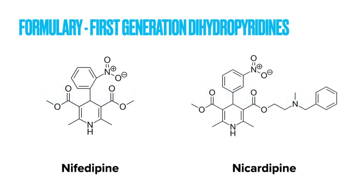The first generation dihydropyridines include nicardipine and also nifedipine — you do still sometimes see immediate release nifedipine in formularies for the management of Raynaud's phenomenon. These were the earliest calcium channel blockers and they have a very fast onset but a very fast offset, meaning you need to dose them multiple times a day to get a sustained effect, which makes them very impractical for day-to-day use. They also have the problem that with this short half-life you can get a reflex tachycardia as they wear off.